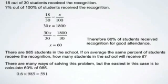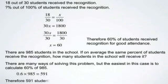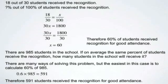60% as a decimal is 0.6. Move the decimal point back two spots to represent division by 100, and I get 0.60 — we don't need the zero at the end, so we can just write it as 0.6. When I do the multiplication, I end up with 591. Therefore, 591 students received the recognition for good attendance.